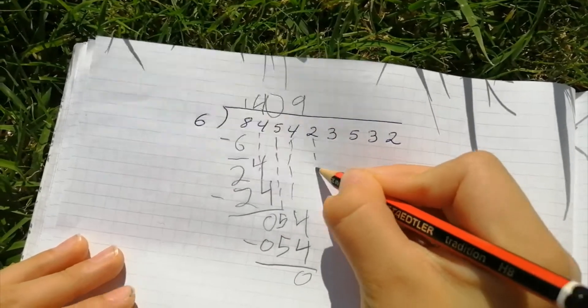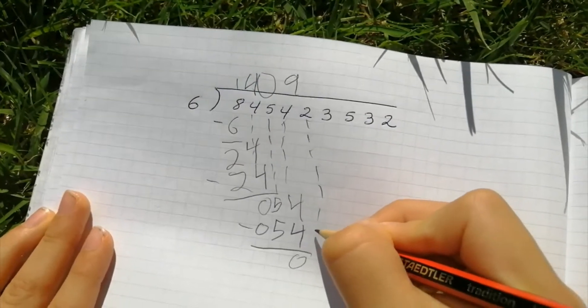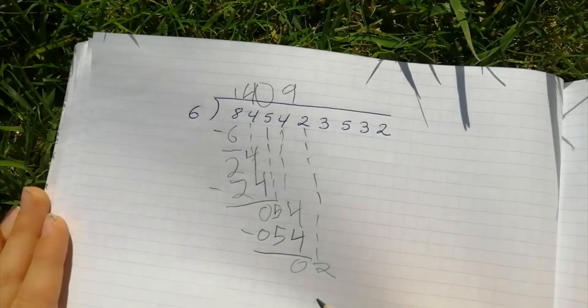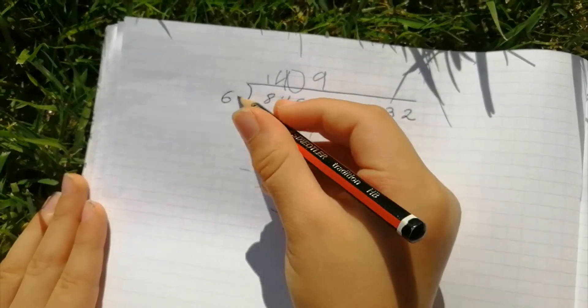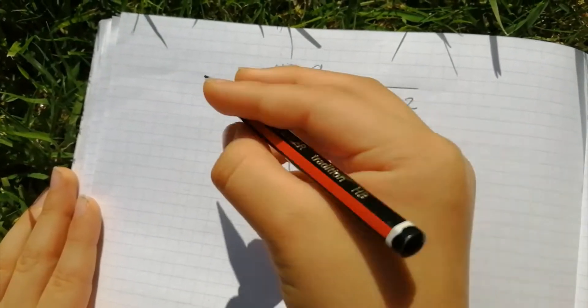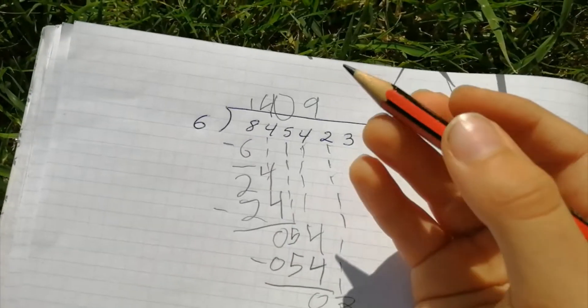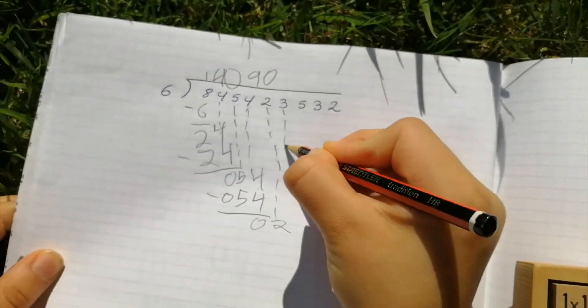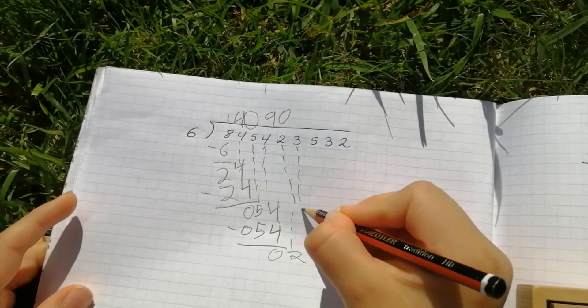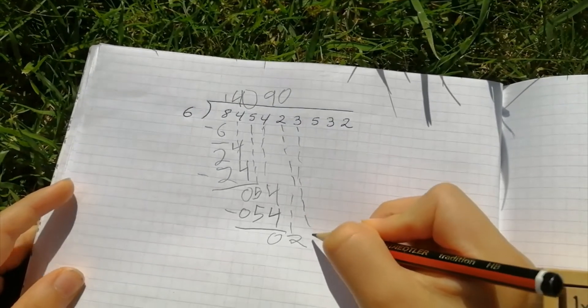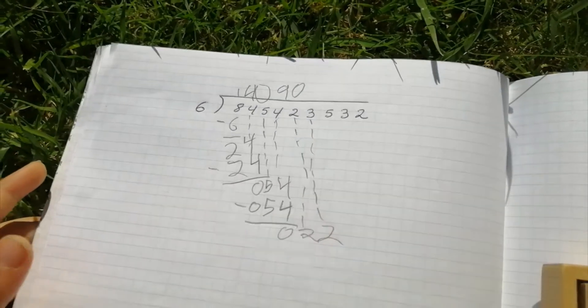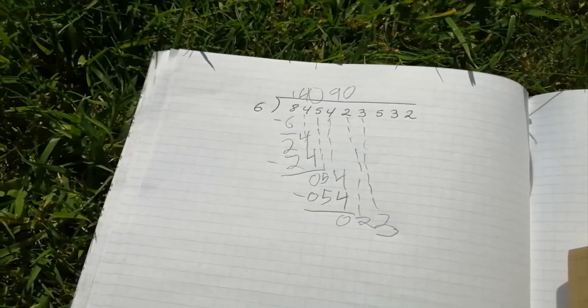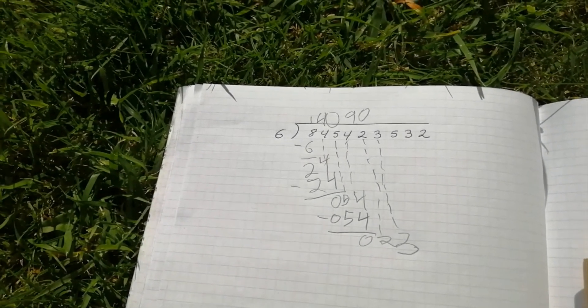And put the next number down. Next number down, two. How many sixes are in two? There's zero. So remember put the next number down if it's too small. So it's twenty-two, twenty-three. I'm crazy today for some reason.